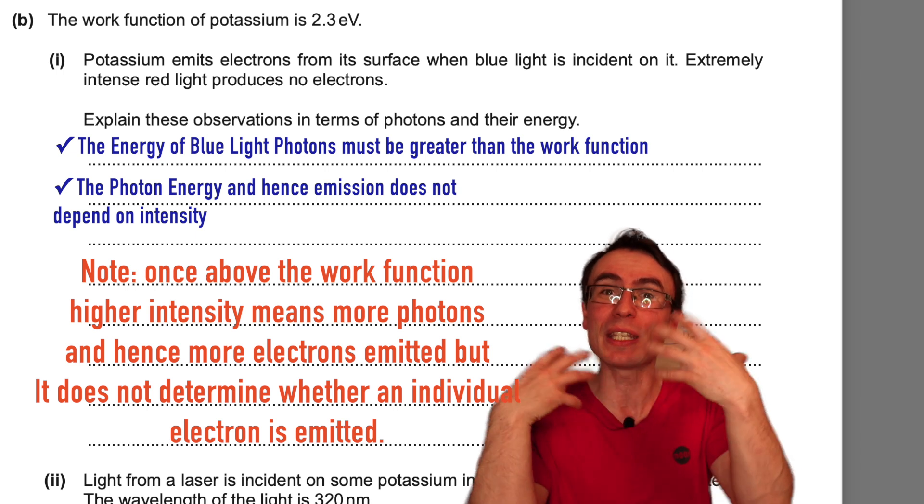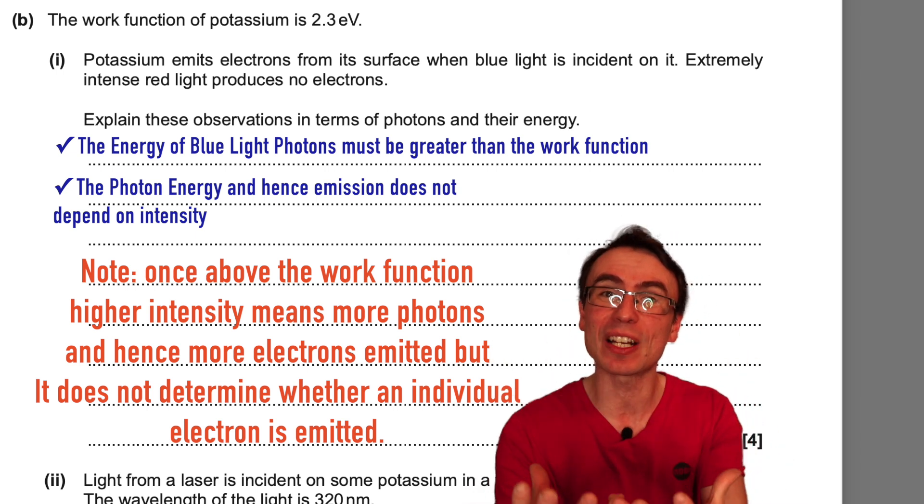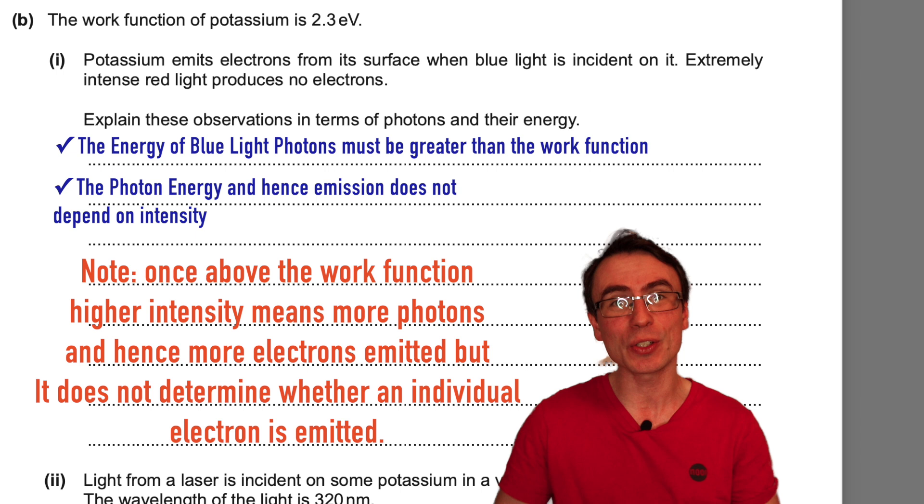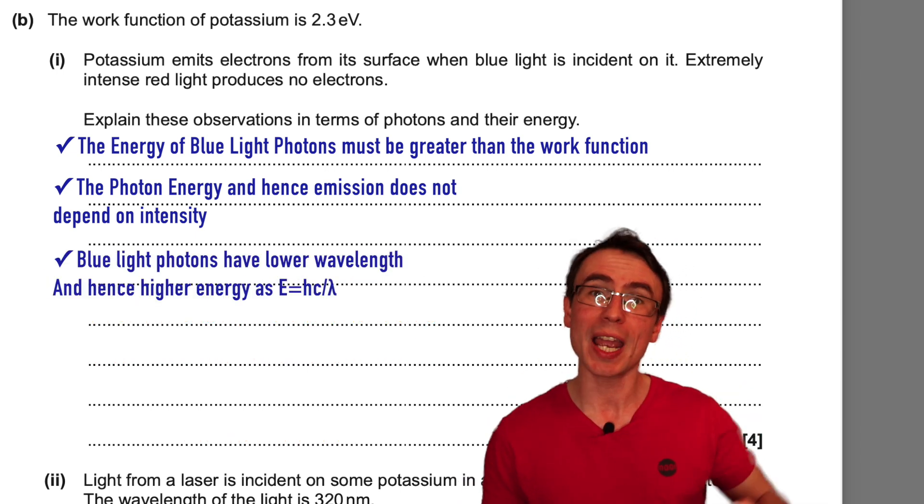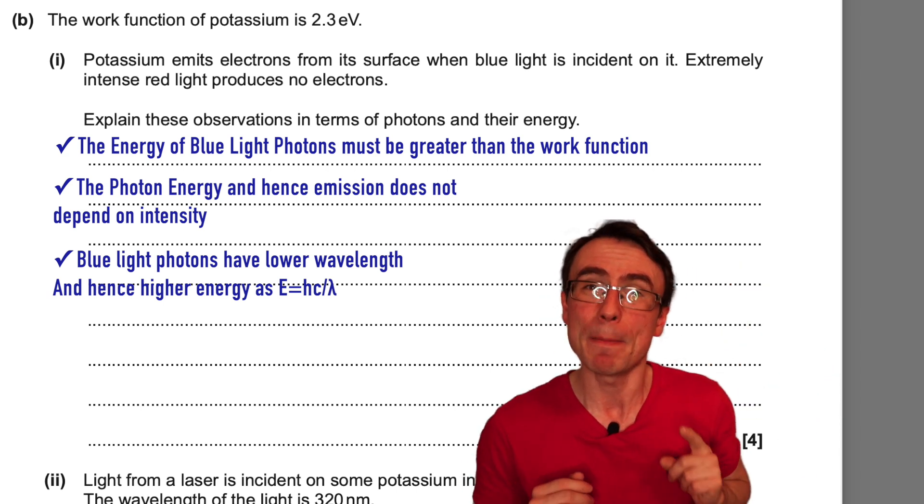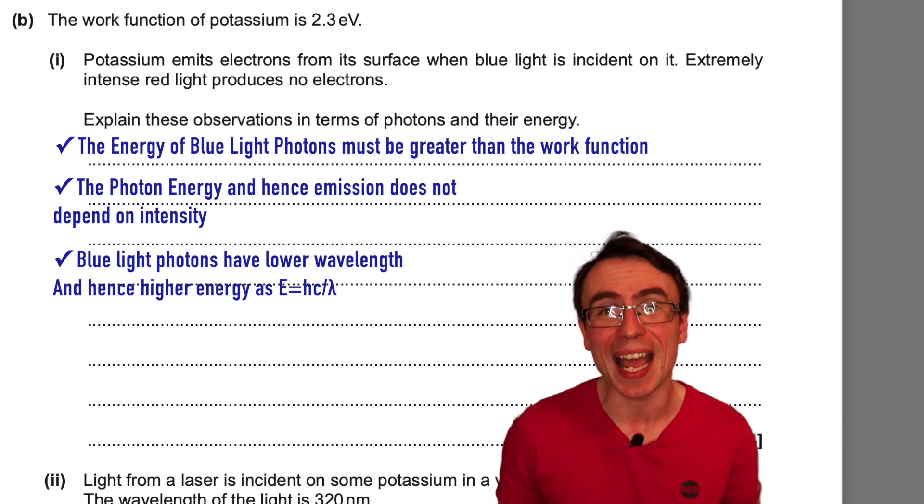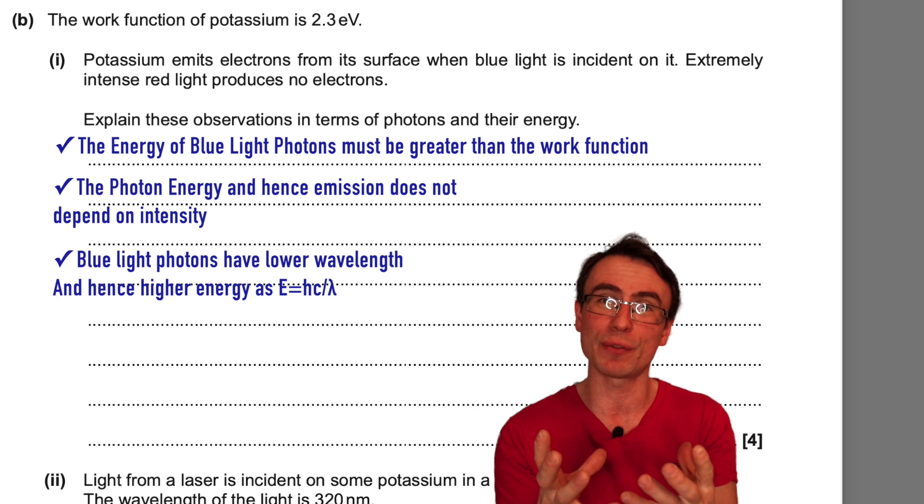but simply on the wavelength of the incoming light and hence its energy, because the energy of the photon is equal to hc over lambda. Blue light has a shorter wavelength, meaning that it has a higher energy for each individual photon.